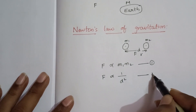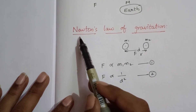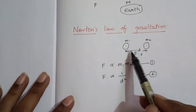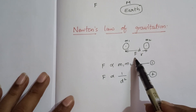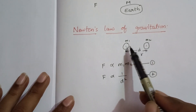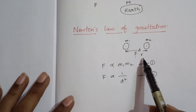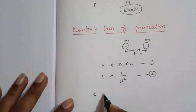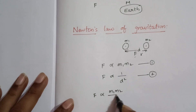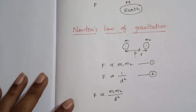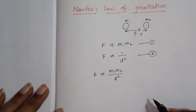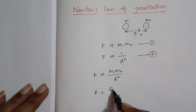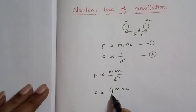Combining these two proportionalities — force directly proportional to the product of masses, and inversely proportional to the square of the distance — we get the formula: F equals G times M1 times M2 divided by D squared. Here, G is a proportionality constant known as the gravitational constant.